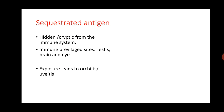For example, injury to the testes can expose sperm antigens to the immune system, leading to orchitis. Similarly, damage to the lens protein can release antigens that the immune system recognizes as foreign, leading to severe inflammation of the eye known as uveitis. The three main sites of sequestrated antigens are the testes, brain, and eye.